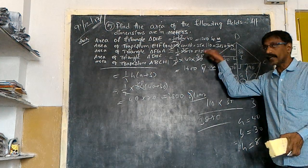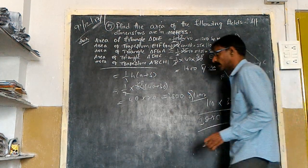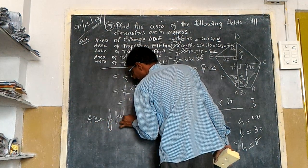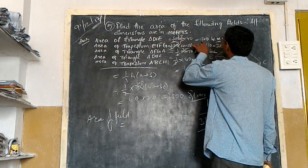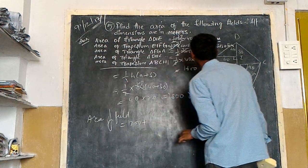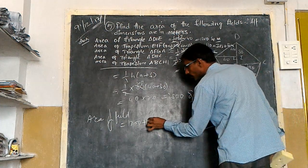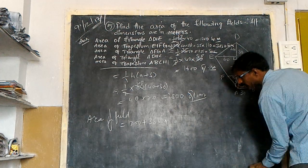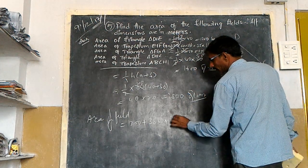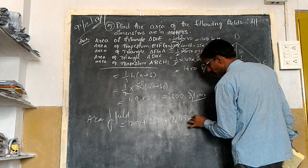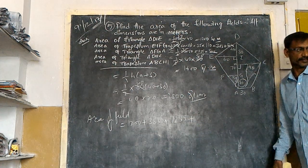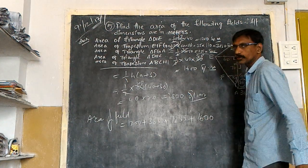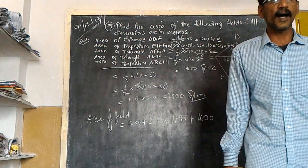By adding all areas we get the area of the field. What is the first one? 1200. What is the next one? 3850. Where is the next one? 1250. Next one? 1600. By adding this we get the area of the field. Thank you.